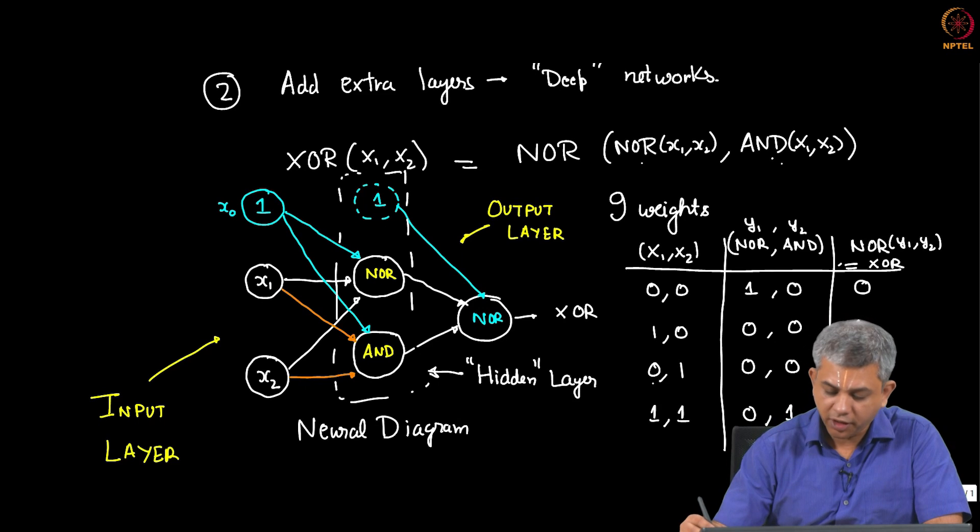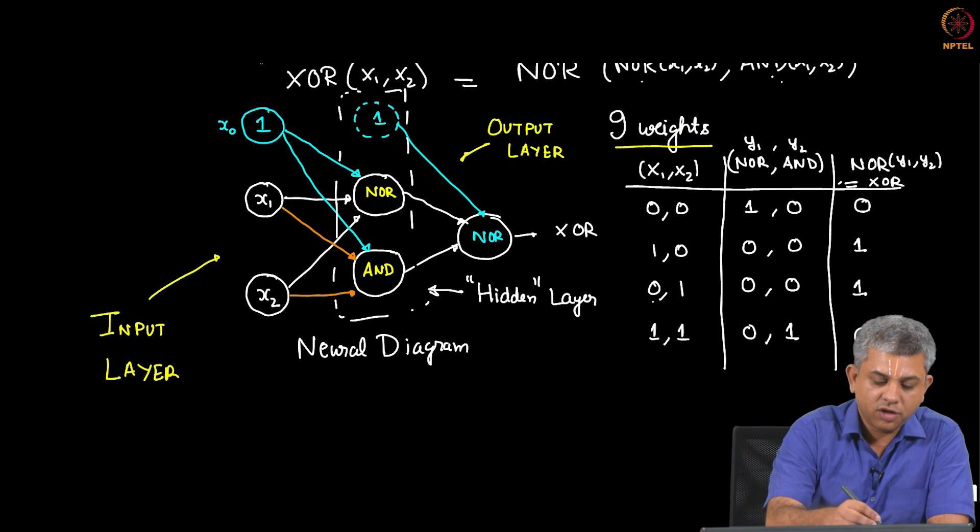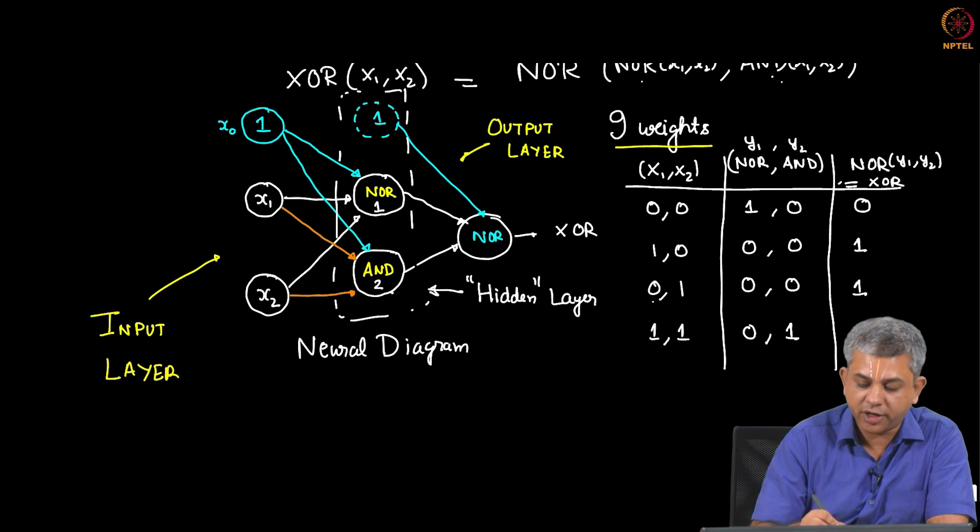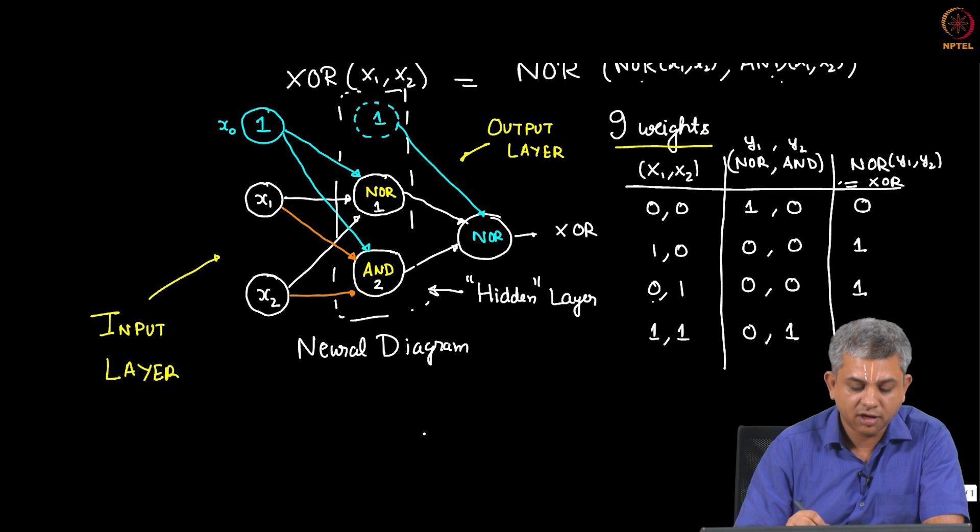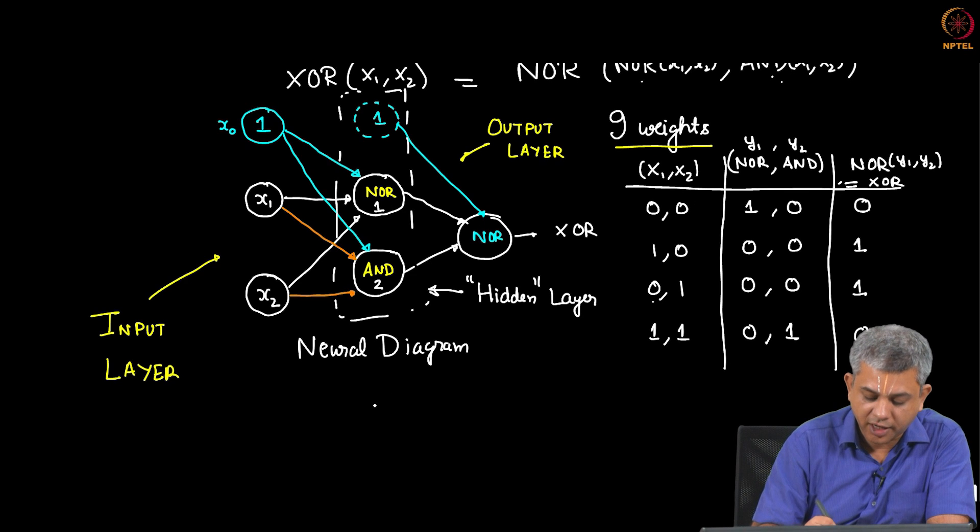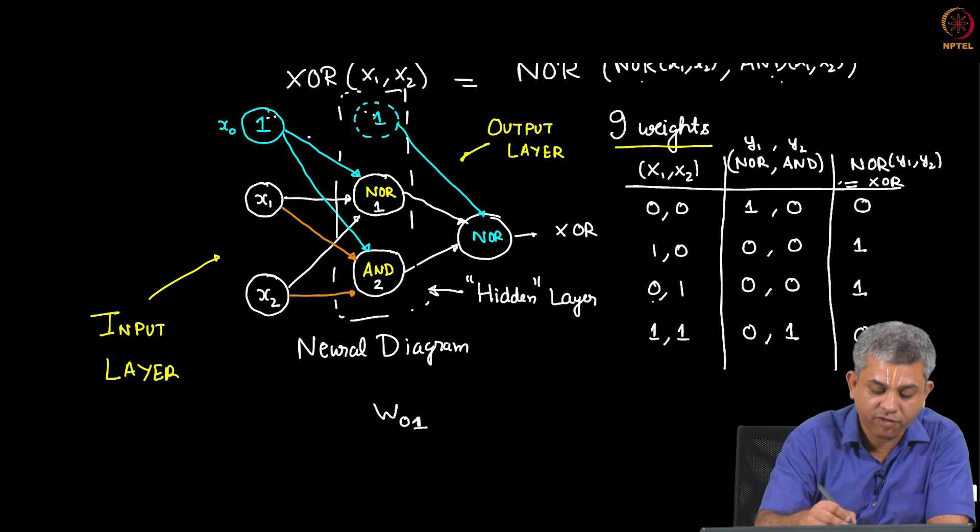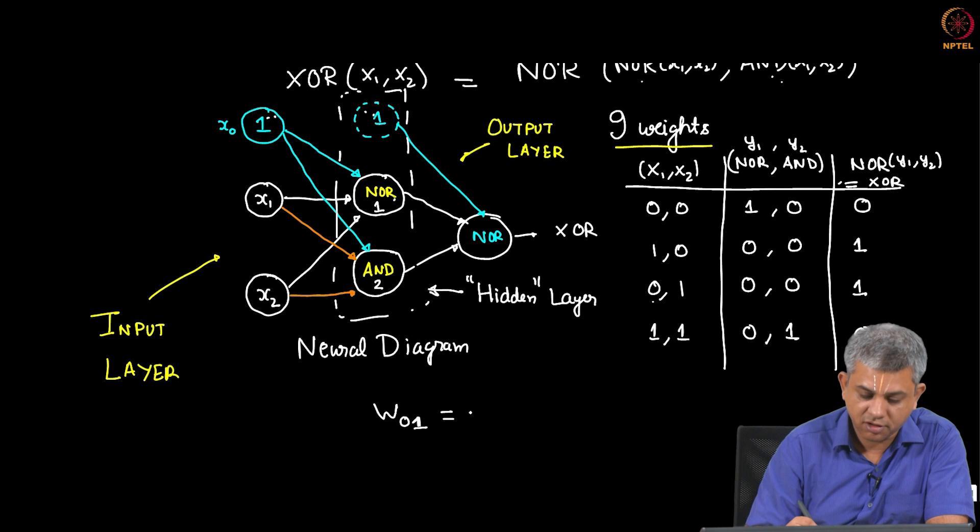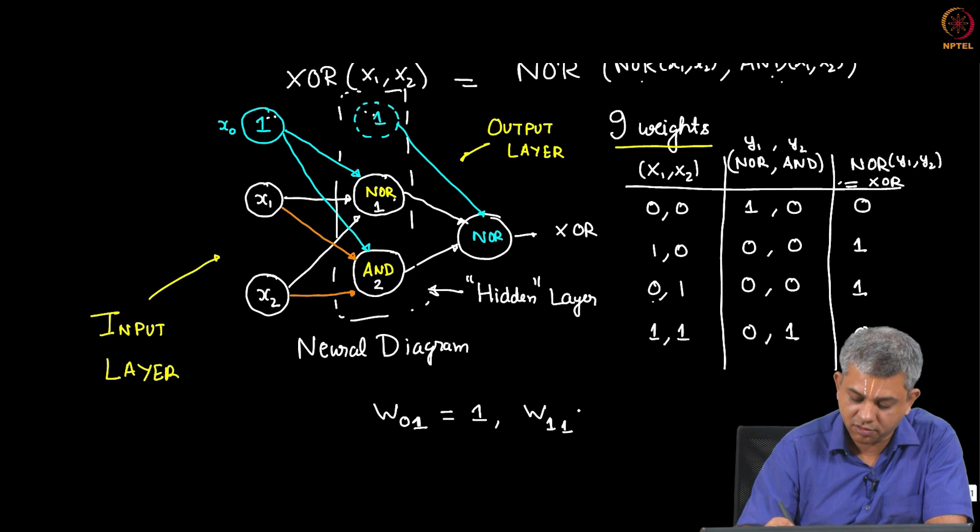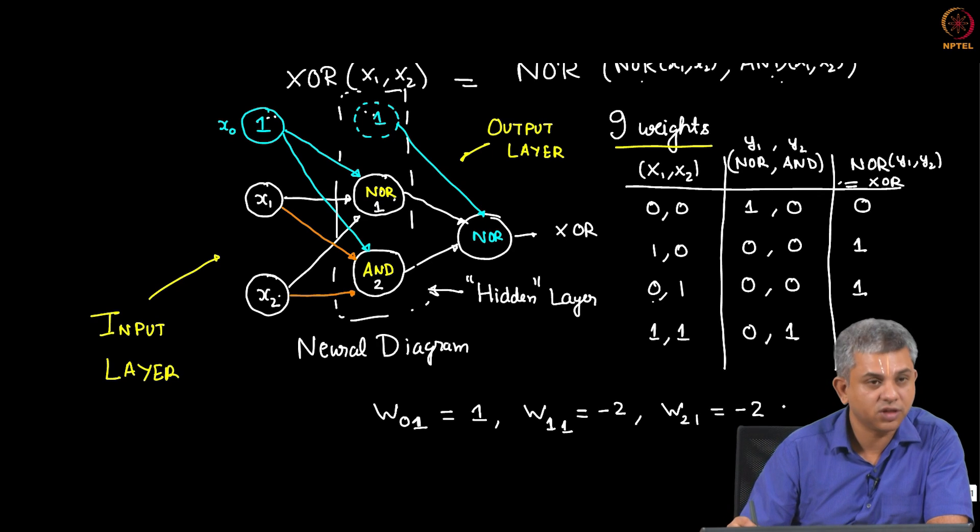Let us use some simple terminology because now we have 9 weights, we need to give some terms, we can simply call them W0, W1, W2 etc. So let us call this as unit 1, this as unit 2, I had called it Y1 and Y2, we will make this a little bit more precise later on. So the weight going from the first unit here or the 0th unit here to this I will call that as W01. W01 is from the bias unit of the input layer to the first unit of this layer. Remember there is nothing that goes from here to here, there is only from here to the first unit. So W01 was the NOR weight which is 1, similarly W11 which would be this weight was minus 2, W21 which was from here to here was also minus 2. These were the weights of the NOR gate.